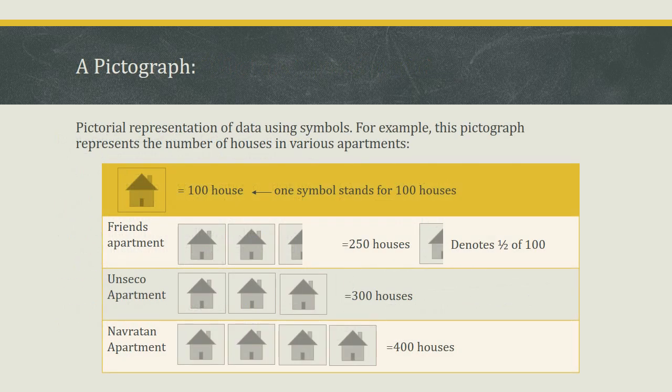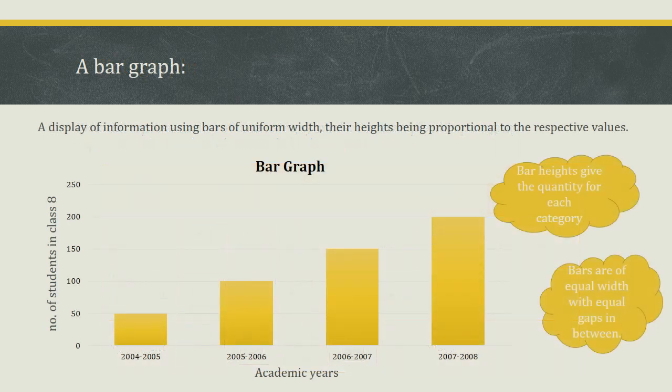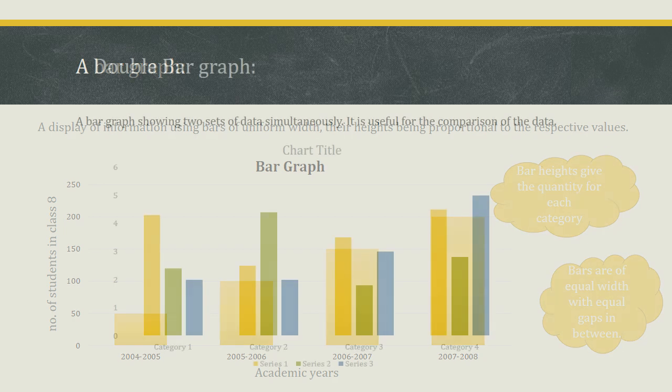A pictograph is a pictorial representation of data using symbols. For example, a pictograph can represent the number of houses in different apartments. A bar graph is a display of information using bars of uniform width, their heights being proportional to the respective values.